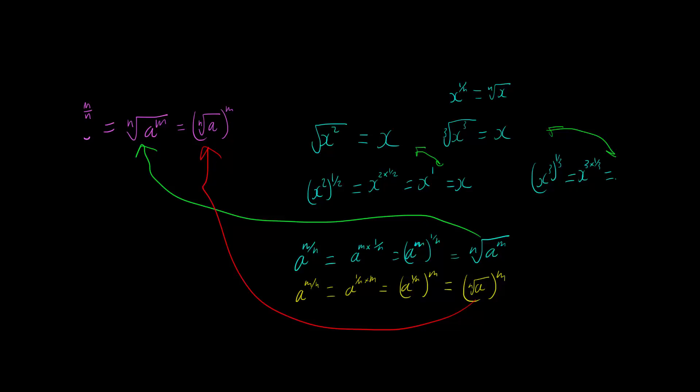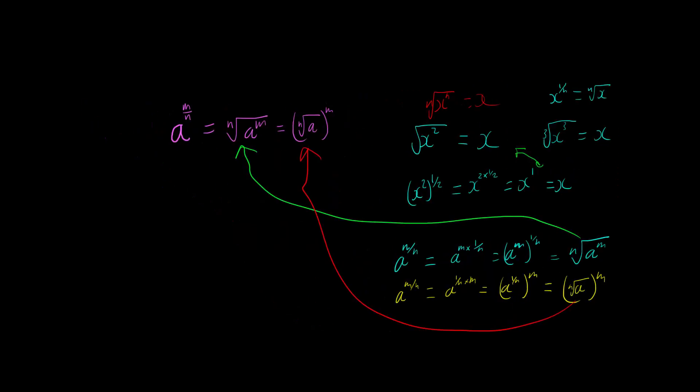So square root of x squared or cube root of x cubed or x to the n to the nth root should just give me x by extension of these two. And then by playing around with the third index law, we can prove that the eighth index law actually works.